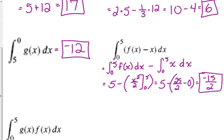Now this last one, the integral from 0 to 5 of g of x times f of x dx. Now I know it's really, really tempting to say that that answer is 60. It is not. We do not have a product rule when it comes to integrals. So we do not have enough information to answer this question.